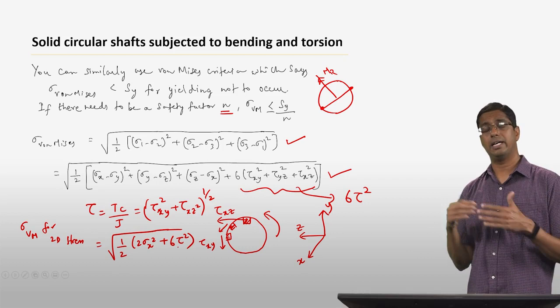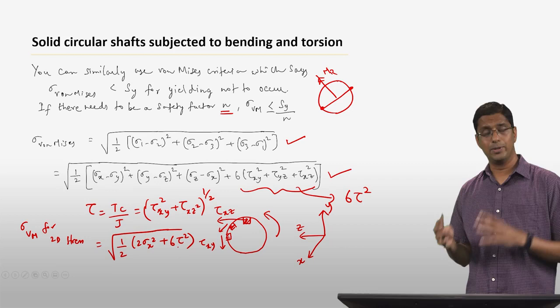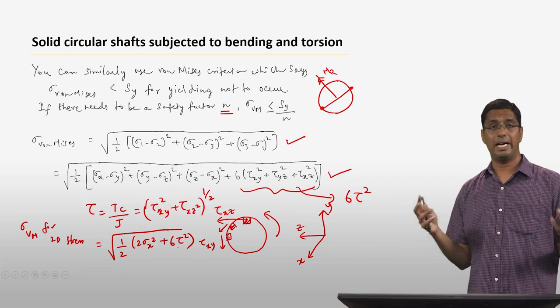In the next lecture, I will look at a hollow circular shaft and how we can use the same ideas to evaluate the factor of safety using the von Mises and Tresca criteria. With that, I will end the lecture. Thank you.